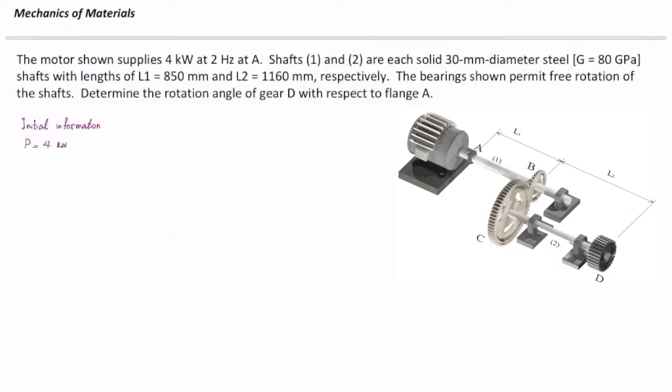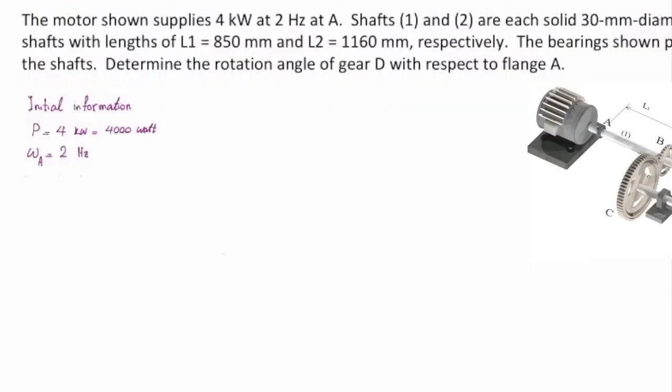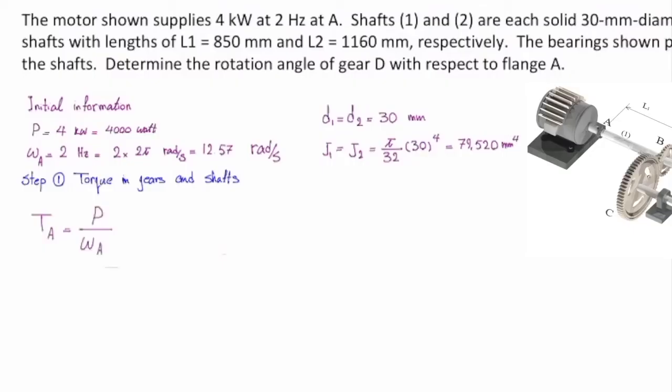First, let me write down what we have. Power is 4 kW, which is equal to 4000 W. Angular velocity is 2 Hz, which is equal to 2 times 2 pi, which is 4 pi, or 12.57 radian per second. Diameter of the first shaft is equal to the diameter of the second shaft, which is 30 mm. And J1 will be equal to J2, which would be pi over 32 diameter to the fourth. So now we can determine how much is torque in shaft 1. Torque is power divided by angular velocity. Let me plug the values here. With the appropriate unit, the torque in shaft 1 will be 318.2.